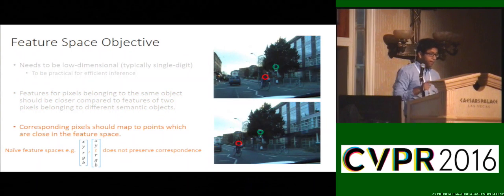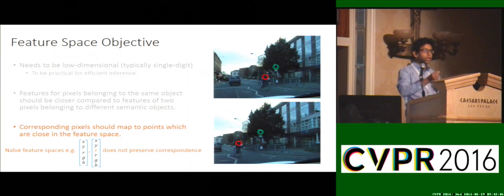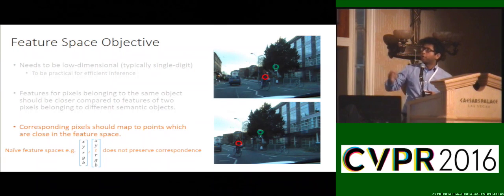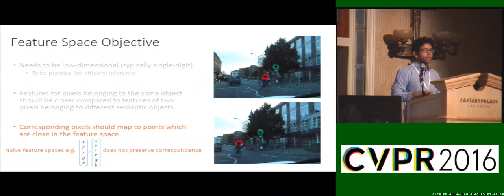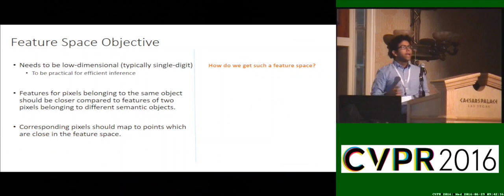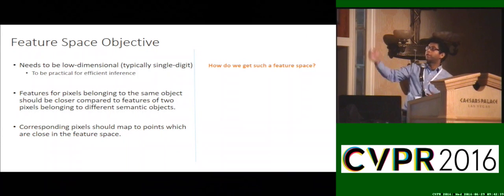Another important criteria for video is that the feature space should respect correspondence. We want corresponding pixels to be closer in the feature space. In this illustration, we want the red pixels in the first image to be closer to the red pixels' features in the second image, same for the green pixels. As you can see, if you use the naive bilateral space features, they do not respect correspondence. That's because in any real world scene, your camera moves and your scene changes. So that feature space doesn't really work.